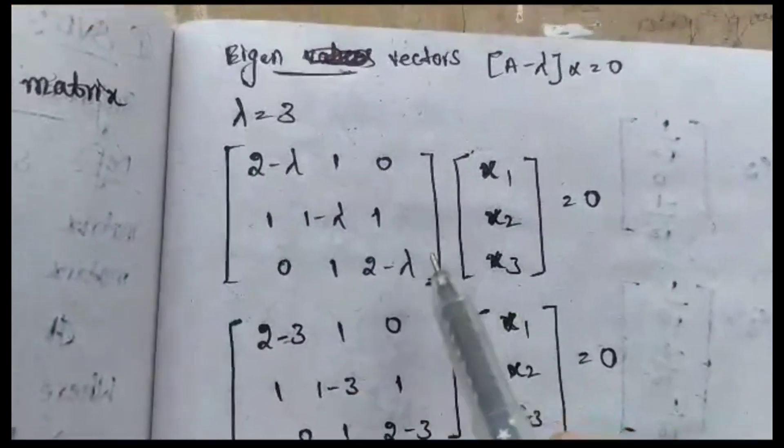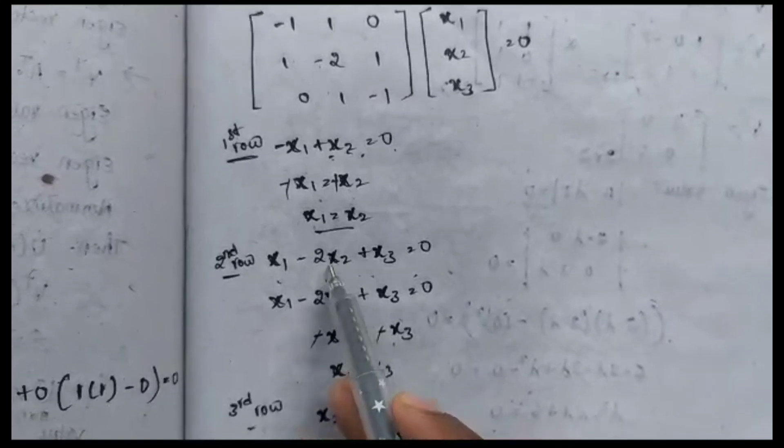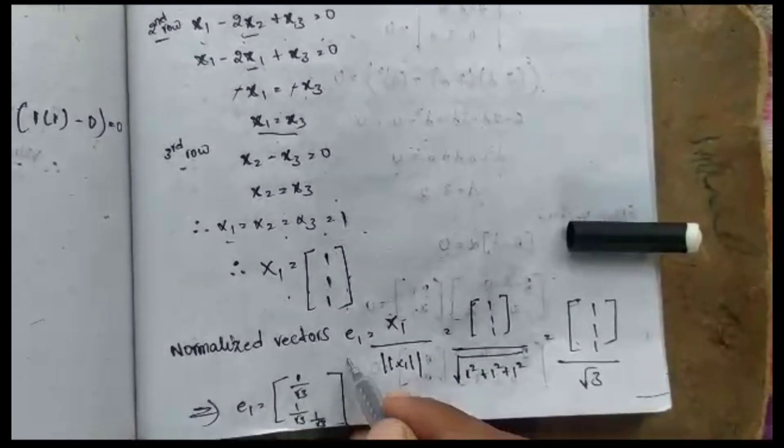For λ = 3, substituting into (A − λI)x = 0 gives a 3×3 system in x1, x2, x3. From the first row: −x1 + x2 = 0, so x1 = x2. From the second row: x1 − 2x2 + x3 = 0. From the third row: x2 − x3 = 0, giving x2 = x3. Therefore x1 = x2 = x3 = 1, and the eigenvector is x1 = [1, 1, 1].